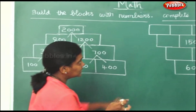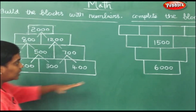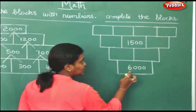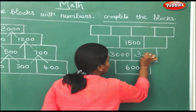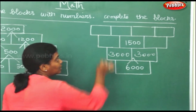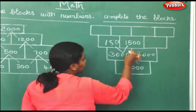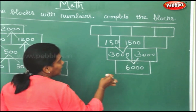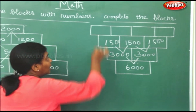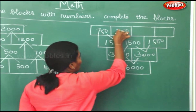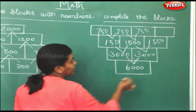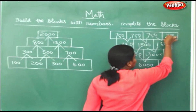Now we try the same pattern with 6,000. Here we go from down to up. 6,000 is split into two blocks of 3,000. Then each 3,000 is split into 1,500 plus 1,500. To form each 1,500, a 750 plus 750 gives you 1,500. Again, 750 plus 750 gives this 1,500, and another 750 plus 750 gives the next 1,500.